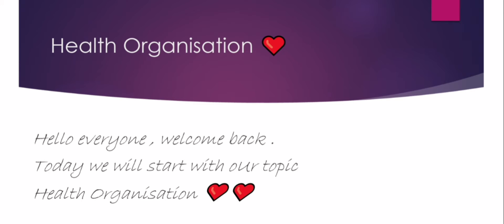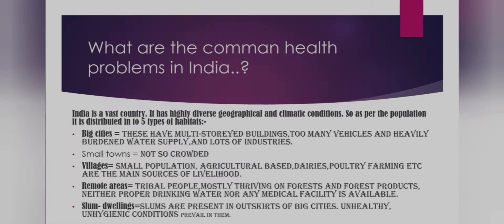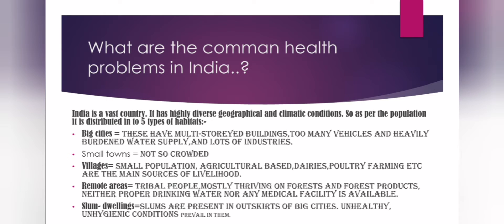Hello everyone, welcome back to our channel. Today we're going to start with the topic of health and organization. Before starting, what do you understand by health? According to the World Health Organization, health is a state of complete physical, mental, and social well-being, and not merely the absence of disease and infirmity. Complete means overall — all things will be proper: mental, physical, and social.